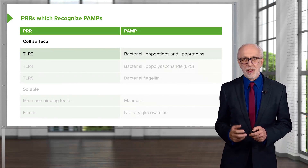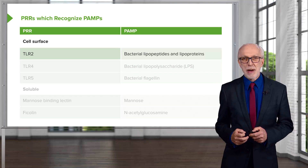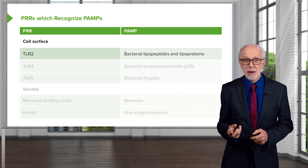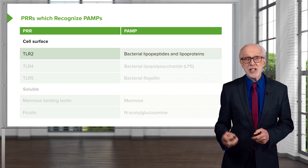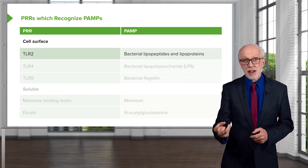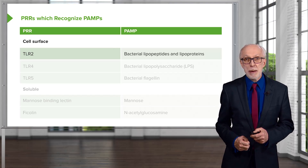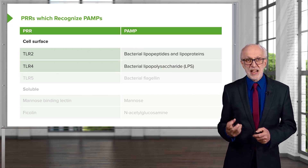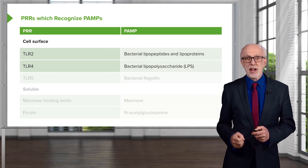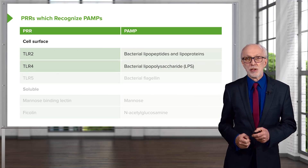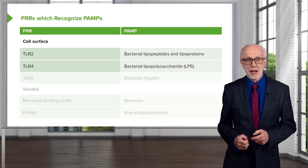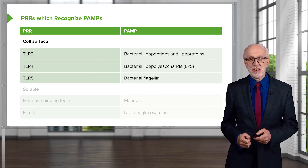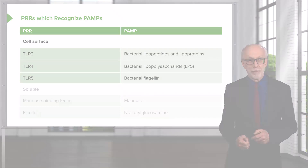Cell surface pattern recognition receptors: TLR2 recognizes bacterial structures shared between many different bacterial species — various bacterial lipopeptides and lipoproteins. TLR4 recognizes bacterial lipopolysaccharide, LPS. And TLR5 recognizes bacterial flagellin.